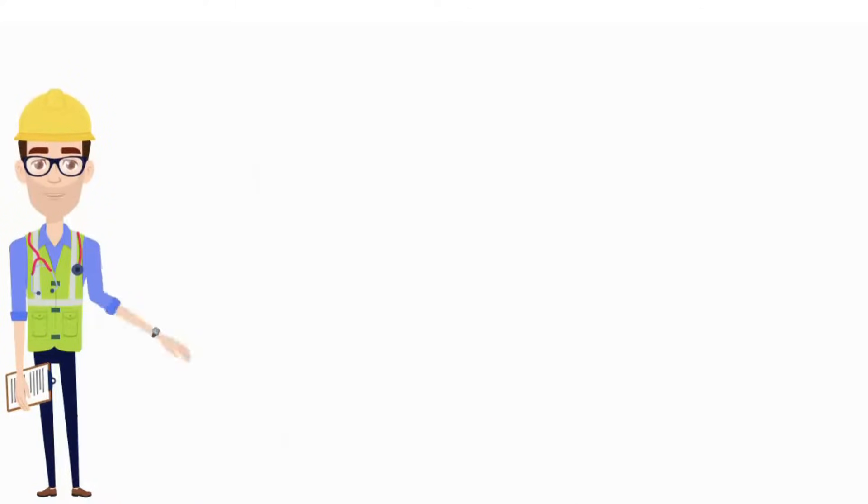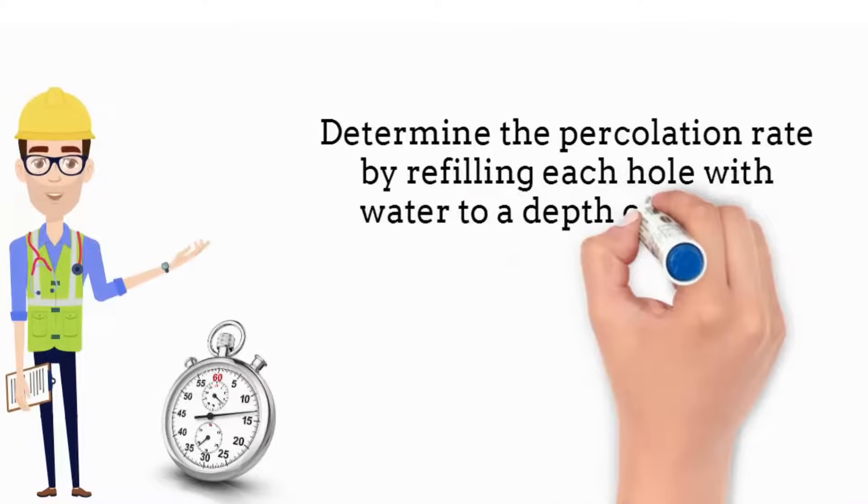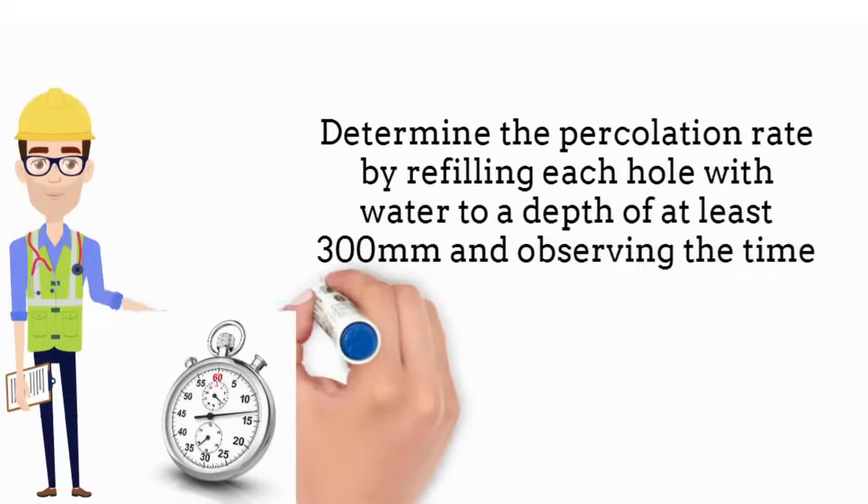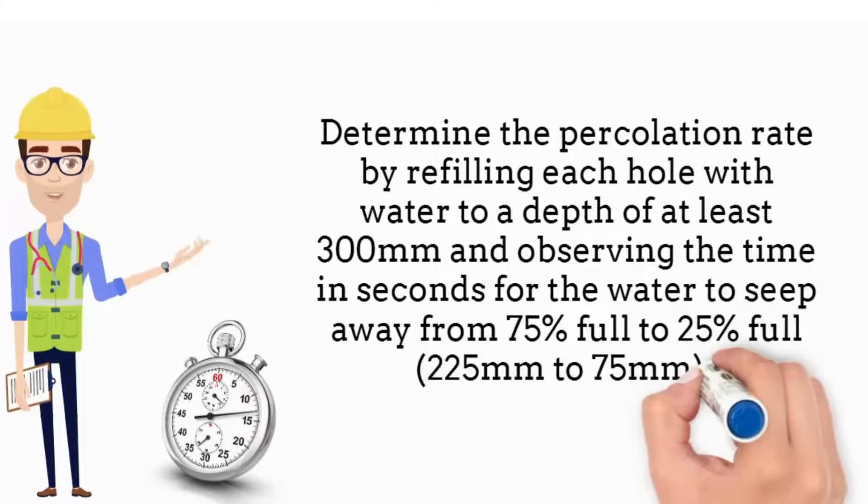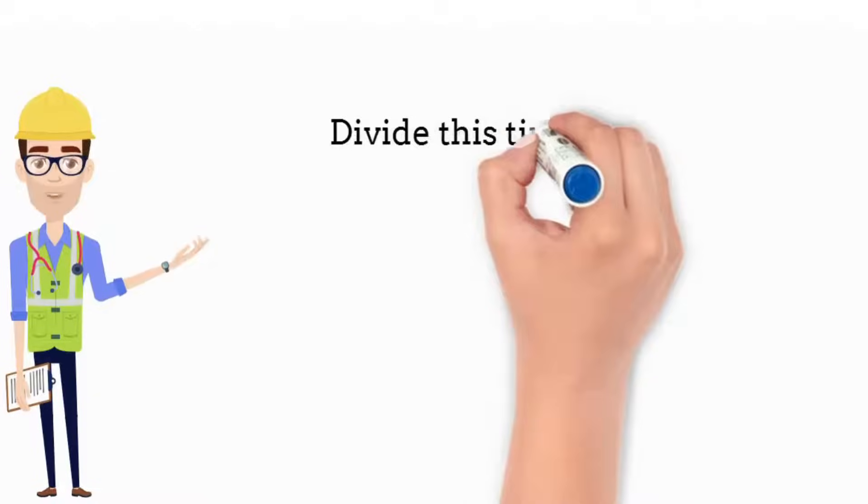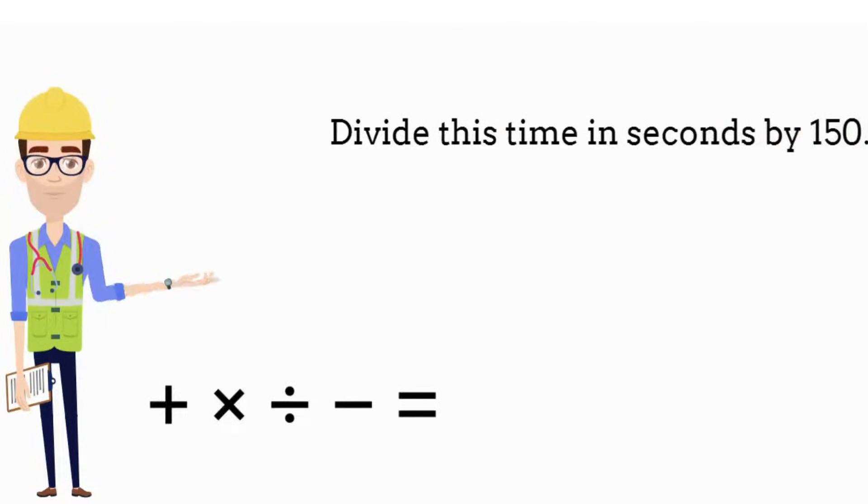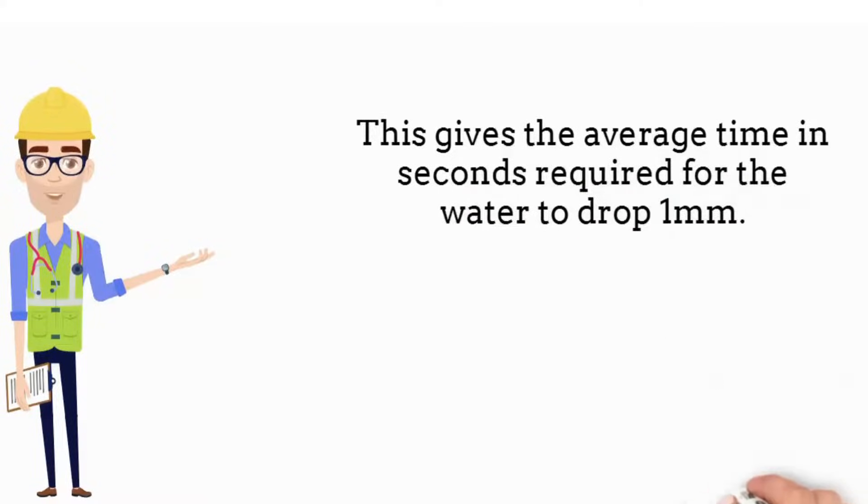Calculate. Determine the percolation rate by refilling each hole with water to a depth of at least 300 mm and observing the time in seconds for the water to seep away from 75% full to 25% full, 225 mm to 75 mm. Divide this time in seconds by 150. This gives the average time in seconds required for the water to drop 1 mm.